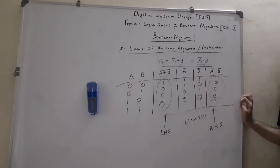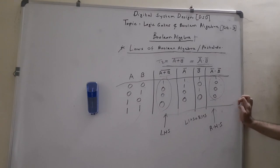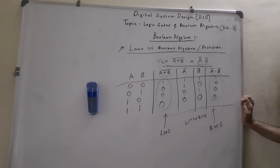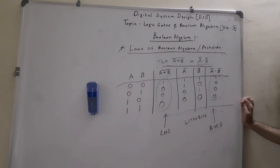So that's all for today. Both De Morgan's laws — their statements, alternative statements, and truth table verification — have been covered. If you like this video, please do like, share, and subscribe to my channel. Don't forget to hit the bell icon to get notifications of all my latest uploads. Thank you.